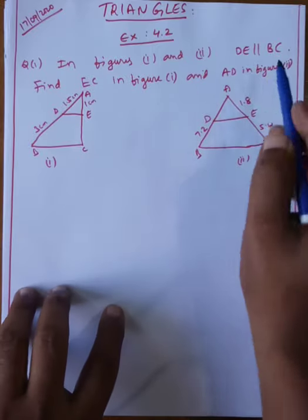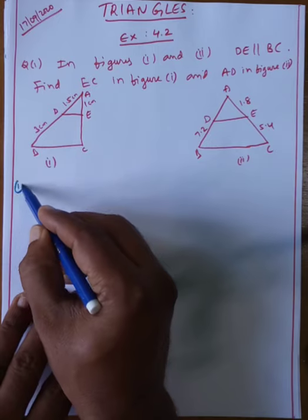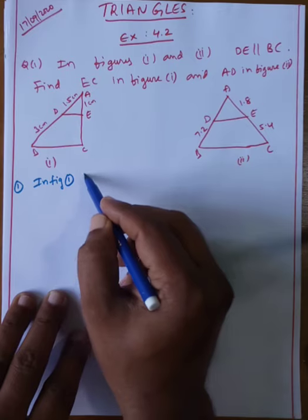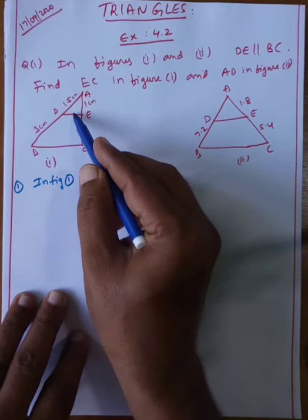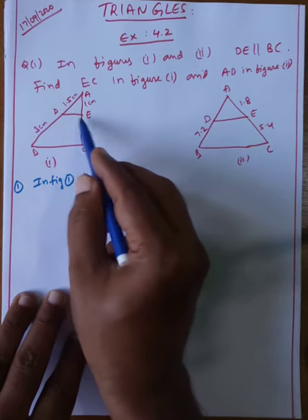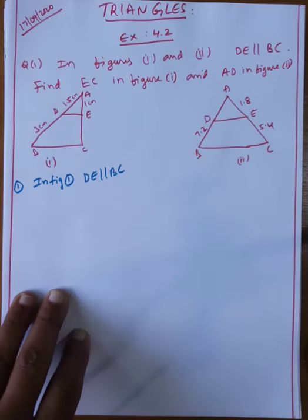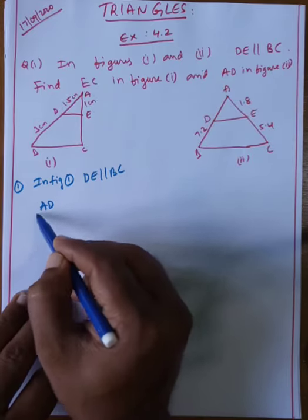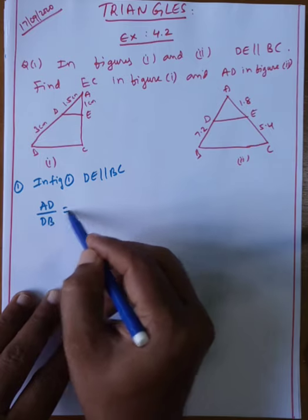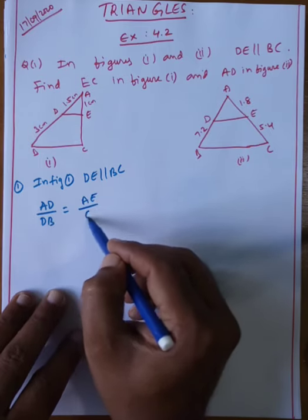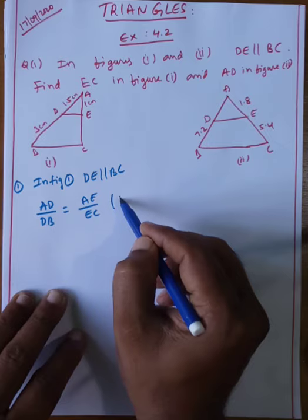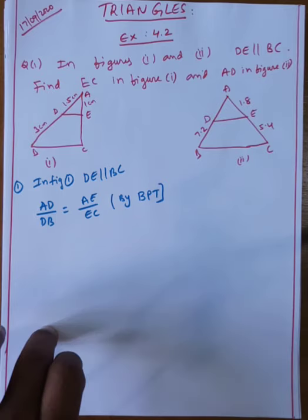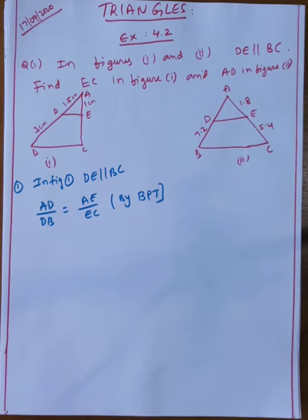In figure 1, DE is parallel to BC. Whenever this side is parallel to that side, the line divides the remaining two sides in the same ratio. By the basic proportionality theorem (BPT), AD by DB is equal to AE by EC.